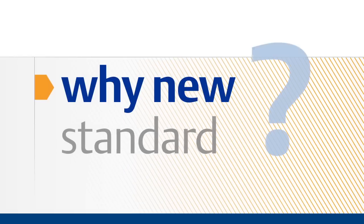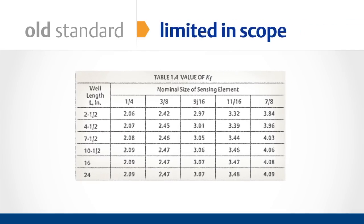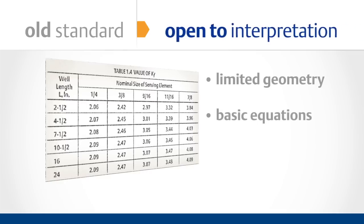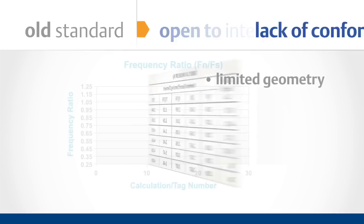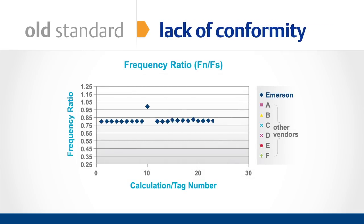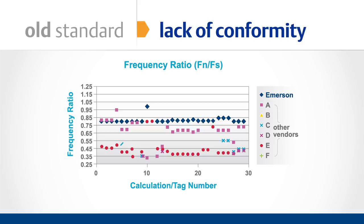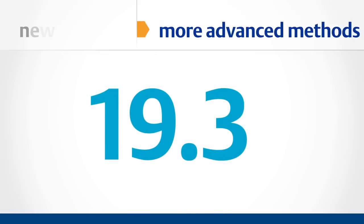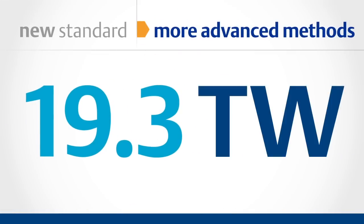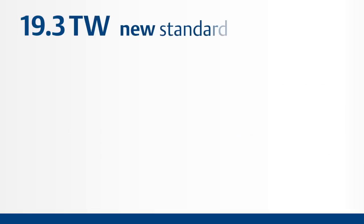It's important to understand why a new standard was needed. The old standard was very limited in scope and overly simplistic. As a result, the standard was open to interpretation. This is what Emerson Process Management found when comparing our frequency ratio results with those of several other vendors — they all claimed to conform to PTC 19.3, yet you can see significant variance in the results. In addition, more advanced methods such as finite element analysis, along with experimental results, caused many in the industry to move away from a strict reading of test code 19.3. Clearly, a broader and more reliable standard was needed.